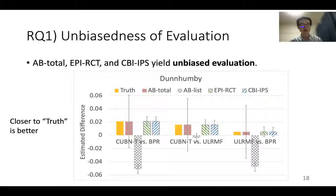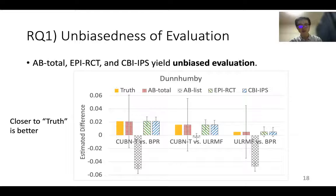This is the result for RQ1. The figure shows the estimated differences in the causal effect of two compared models. If it's closer to the true value, it is better. We can see that A-B total, EPI-RCT, and CBI-IPS produce estimates centered around the true values. So they are unbiased evaluations.